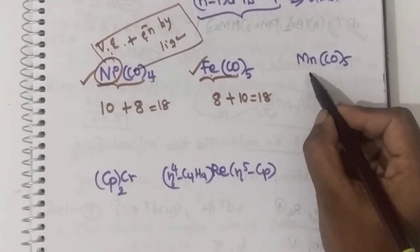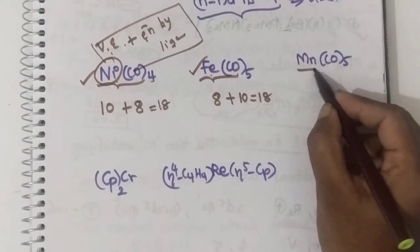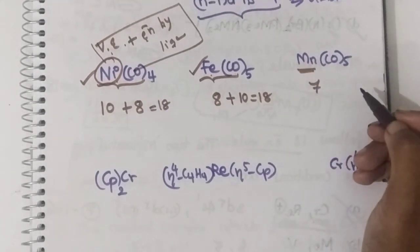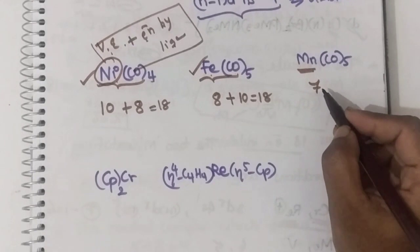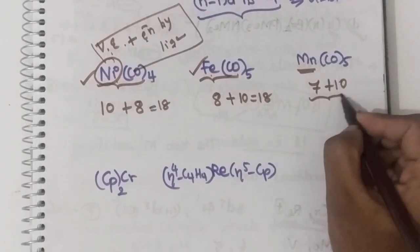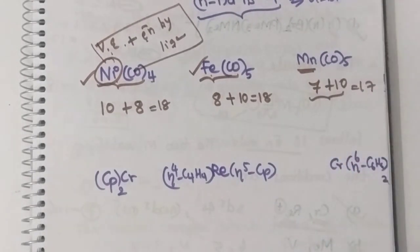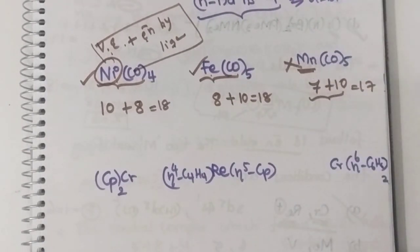Similarly, in the case of iron pentacarbonyl, Fe(CO)5: the valence electron of iron is 8 — 3d6, 4s2 configuration. Five carbonyls, each donating 2 electrons, gives 10 electrons. Total: 8 + 10 = 18. Hence, this complex is also stable because it obeys the 18 electron rule. For Mn(CO)5, manganese has 7 valence electrons and 5 carbonyls donate 10, giving only 17. It does not obey the 18 electron rule, hence it is not stable.